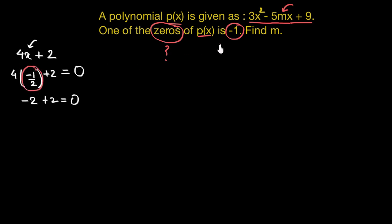Similarly, we are given that negative 1 is the zero of this given polynomial. This means p of negative 1. Wherever we can see x in this polynomial, if we will replace x with negative 1, the value of this polynomial would be equal to 0. Let's do that.